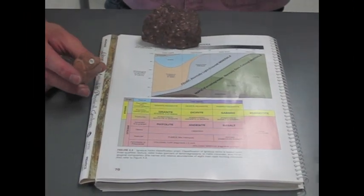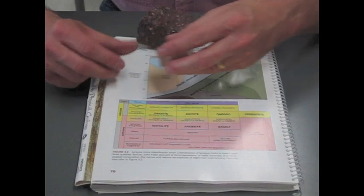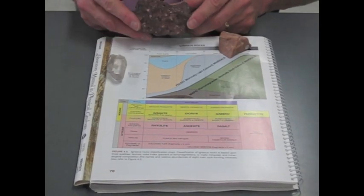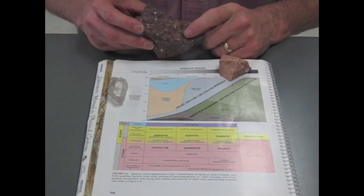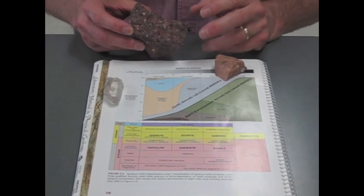This rock is a rhyolite porphyry, and the porphyry texture, if you look carefully, you can see some big crystals in here, and in between the crystals there's a fine-grained ground mass.